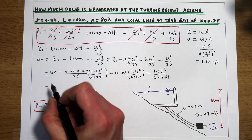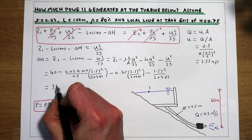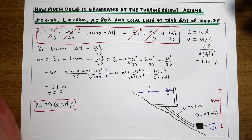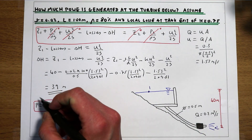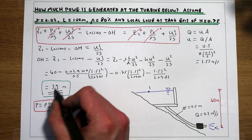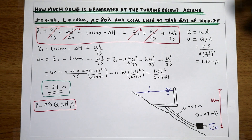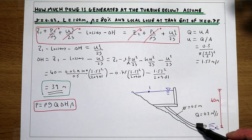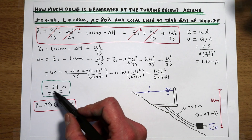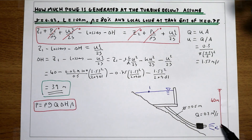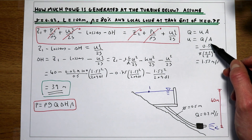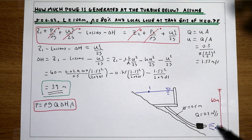Once we've plugged the numbers into that equation, we end up with a delta H of 39 metres. What that answer is telling us is that the turbine is extracting 39 metres of pressure head from the flow. We start out with energy at point 1, have losses in the pipe, the turbine extracts 39 metres of energy from the flow, and we're left with a velocity of 1.53 metres per second and a flow of 0.3 metres cubed per second coming out of the pipe.